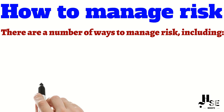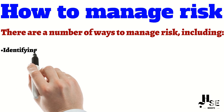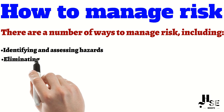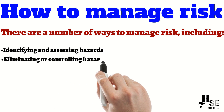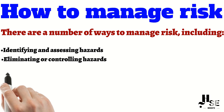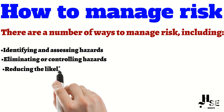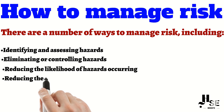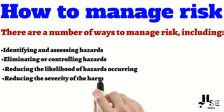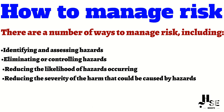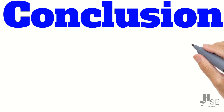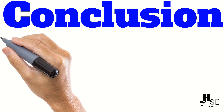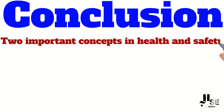How to manage risk: there are a number of ways to manage risk, including identifying and assessing hazards, eliminating or controlling hazards, reducing the likelihood of hazards occurring, and reducing the severity of the harm that could be caused by hazards.